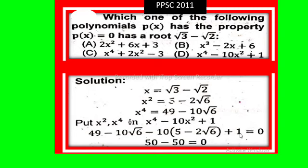plus 20√6, plus 1 equals 0. So 50 minus 50 equals 0, which is correct. So option D is correct, that is